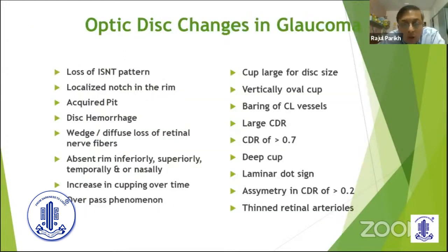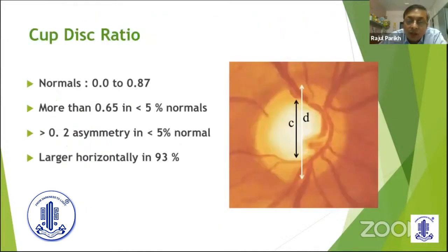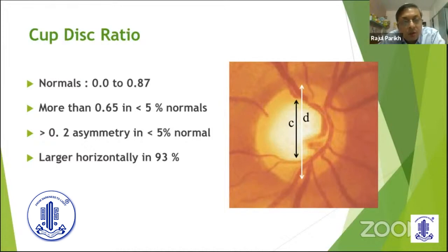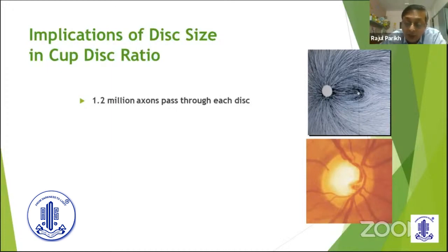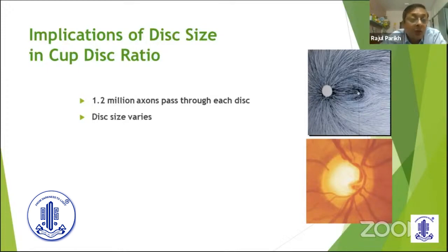We have a habit of only doing cup-disc ratio for the diagnosis of glaucoma as disc changes. Please don't do that because cup-disc ratio has huge variability. The CDR is directly related to the disc size. Basically, around 1.2 million axons pass from each disc. The canal varies, the disc size varies, and if the disc size varies while the number of fibers remains the same, the cup size would vary. The peripheral fibers form the rim and the central leftover space forms the cup.